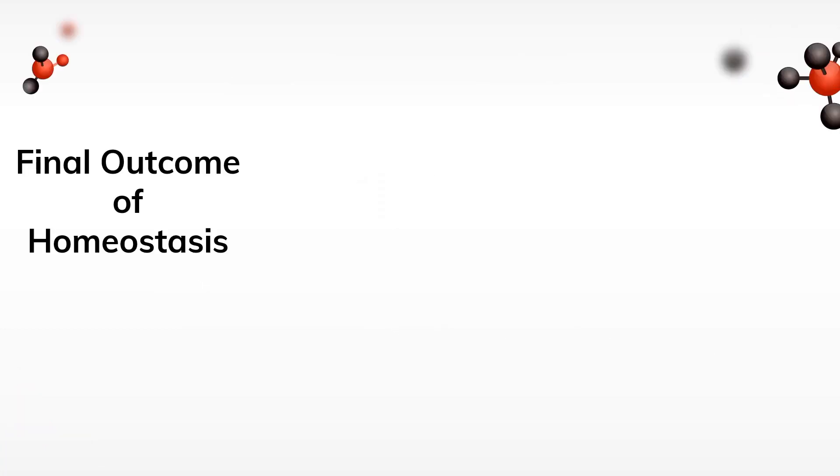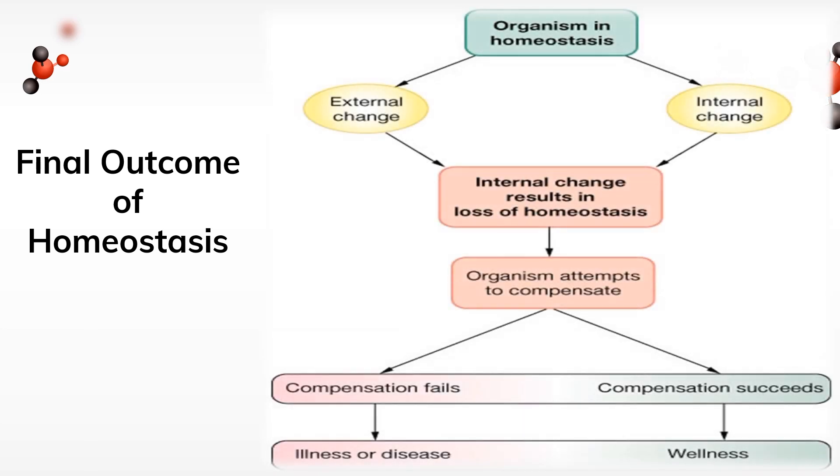So what is the final outcome of homeostatic processes? An organism is in homeostasis. In case of any change, either internal or external, there is loss of homeostasis in that organism. As a result of this loss, the organism attempts to compensate this change.